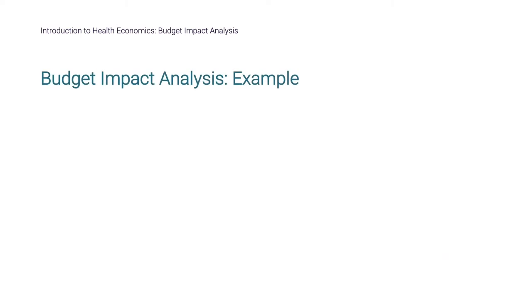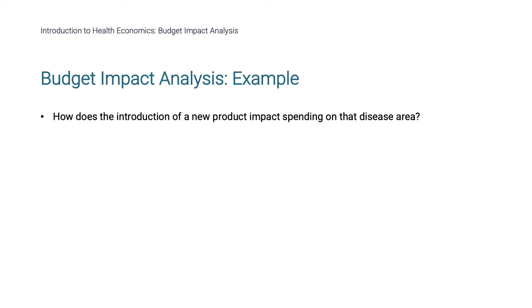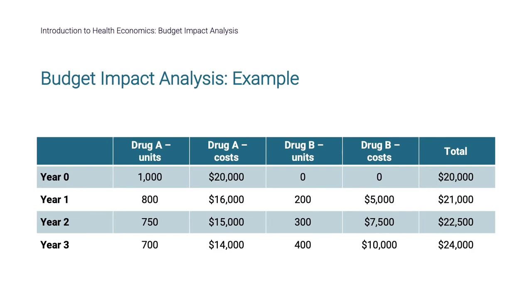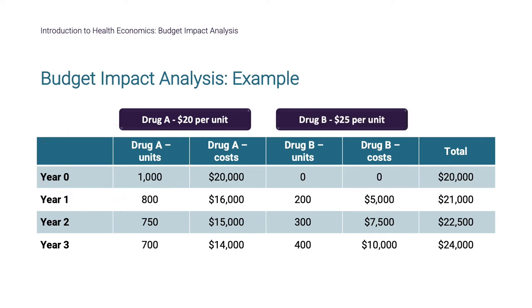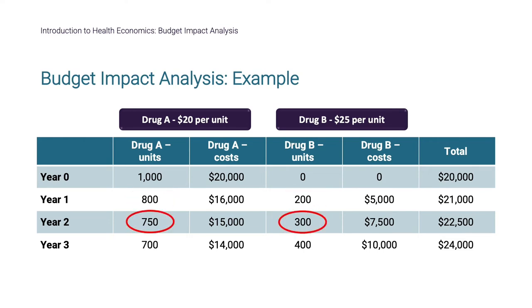A BIA considers how the introduction of a new product affects spending on that disease area. In our example, drug A has a unit cost of $20 and was the only available drug for a particular indication. Drug B is a new product being added to the formulary and has a unit cost of $25. Introducing new products changes market share and may also change treatment patterns or lead to new patients being treated who were not in the past.